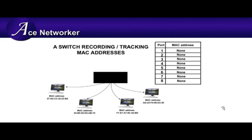What a switch will do initially is perform exactly like a hub in the very beginning. So let's say the first desktop here sends a packet out to the rest of the network — let's say it needs to send something to one of these other desktops. We're just going to use this switch and these four devices connected to it as our example.